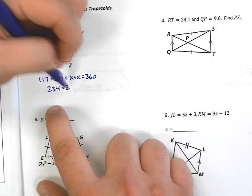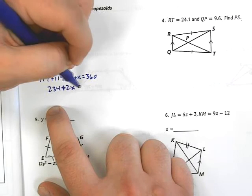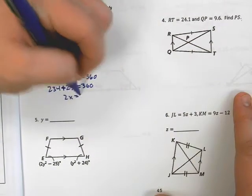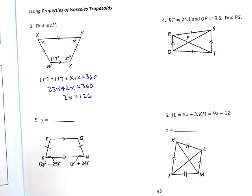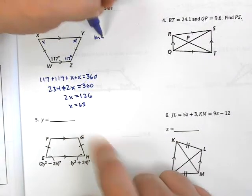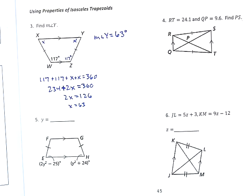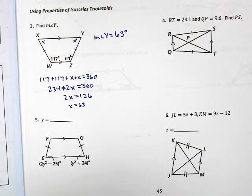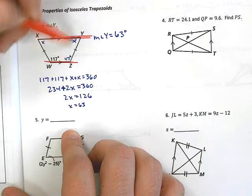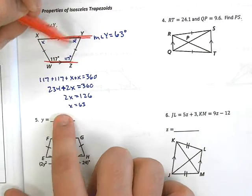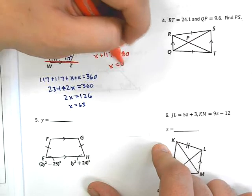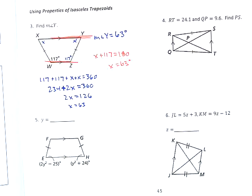If I keep going, what do we get here? 2X equals 126. And, if I divide by 2, I should get 63. So, now I know that measure of angle Y is equal to 63 degrees. Hopefully, you guys saw that in an even easier way. Do you remember if these lines are parallel? What do we call these types of angles? These are same side interior, so they have to be supplementary. So, you could have just said X plus 117 is equal to 180, and got 63 as well. Okay? Cool. Let's keep going.